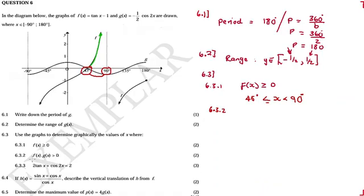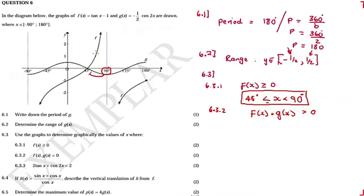Now 6.3.2: where is F(x) times G(x) greater than 0? The only time the product of F and G is positive is when both functions are simultaneously negative or both simultaneously positive. We need to find the parts of the graph where both are negative at the same time or both positive at the same time.